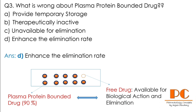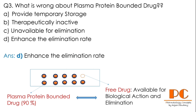So if 90% is protein-bound, first the 10 mg free drug produces action. After elimination, from the remaining 90 mg protein-bound drug, 10% (i.e., 9 mg) becomes free drug again, and 81 mg remains protein-bound. This continues reversibly. So protein-bound drug is unavailable for elimination and biological action, and provides temporary storage for further drug action.